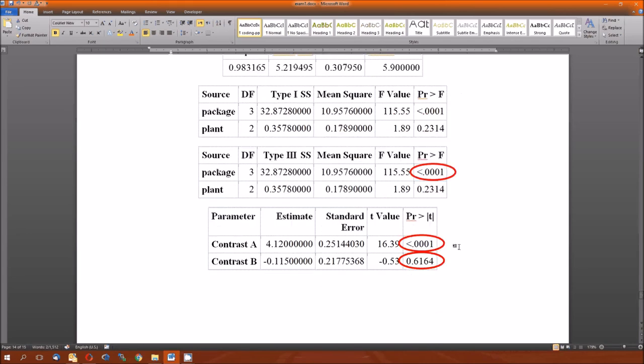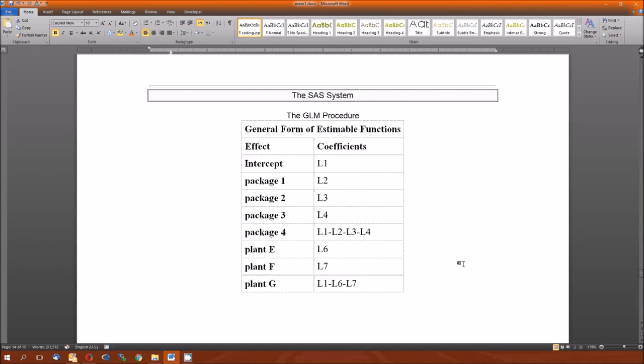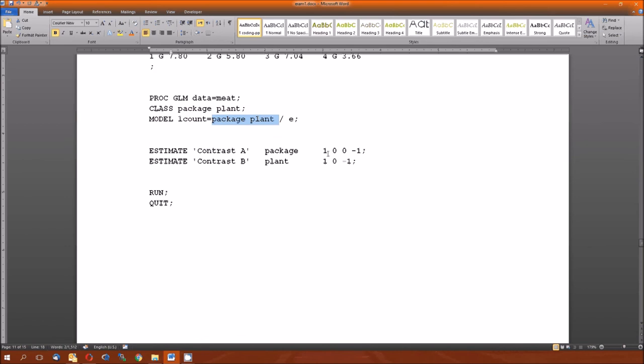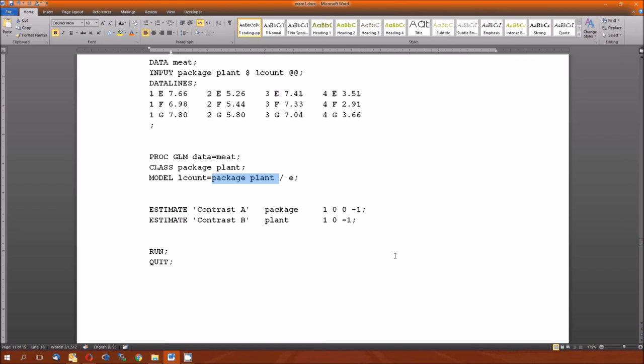And we've got two contrasts. Contrast A corresponds to the mean for package one is equal to the mean for package two. And contrast B is for the mean of plant A is equal to the mean of plant B. Just double check that for a moment. No, I got that wrong. Package, mean of package one is equal to the mean of package four, and the mean of plant A is equal to the mean of plant B. I'm sorry, that would be E and G instead of A and B.